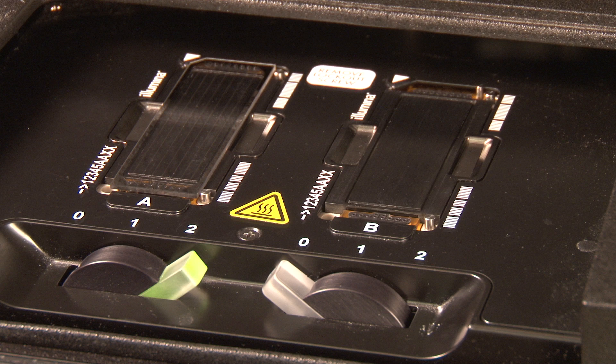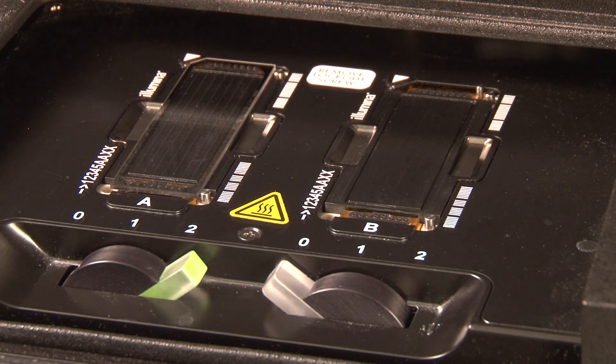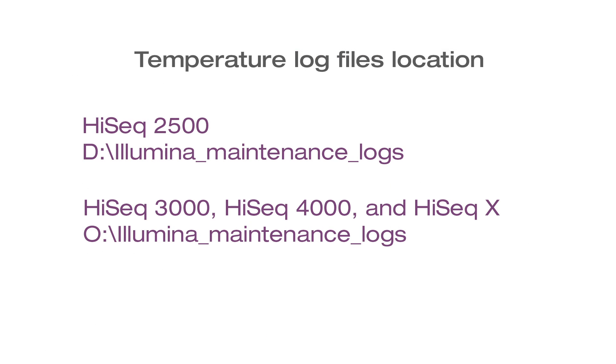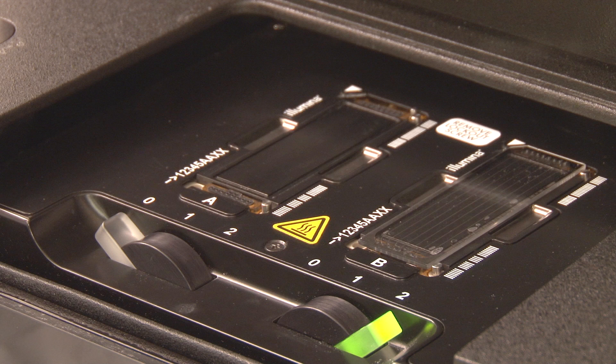The other thermal systems are the Peltiers, which are located underneath the flow cell stages. As the Peltiers cycle through a range of temperatures, the temperature profile is visible during the run on the temperature chart, and also recorded in a temperature log file. The temperature log file can be found here. Now let's take a look at the flow cell stage.